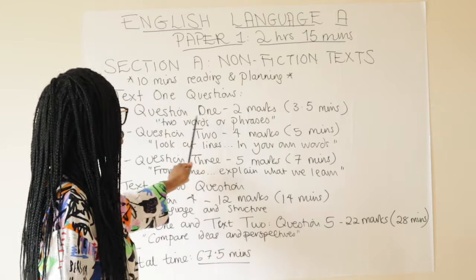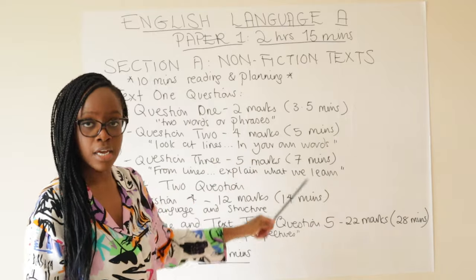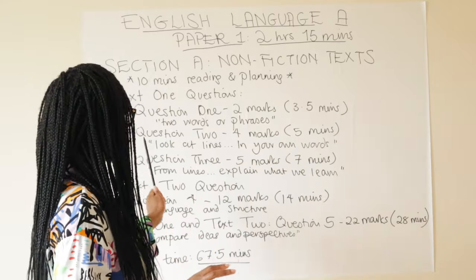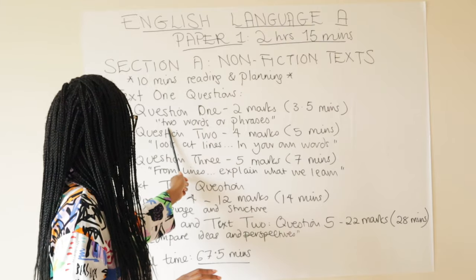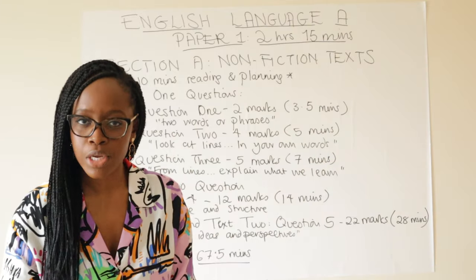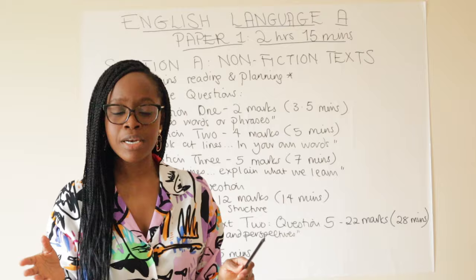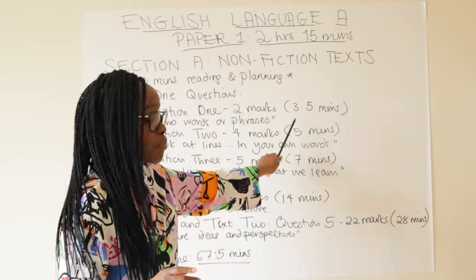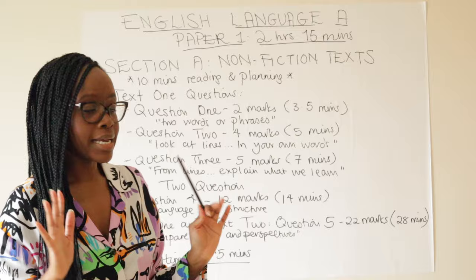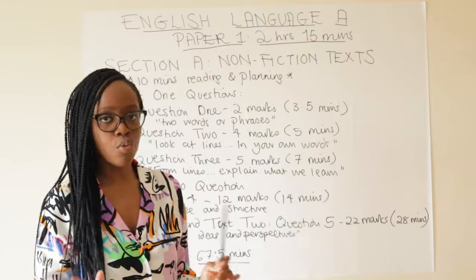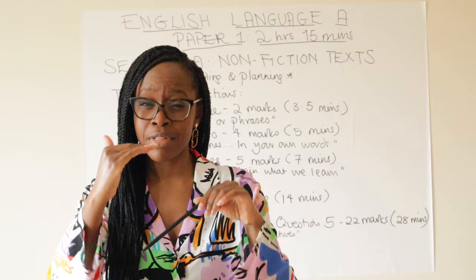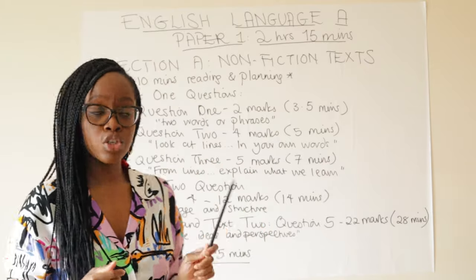Question one is related to Text 1, the unseen text, and is worth two marks. It's a very brief question — you'll always be asked to select two words or phrases that relate to a keyword. Don't spend more than three and a half minutes on this question and then move on. It's worth only two marks, so you don't want to write reams of text.